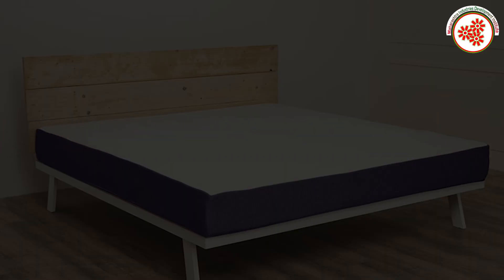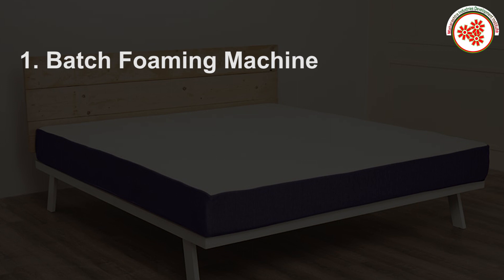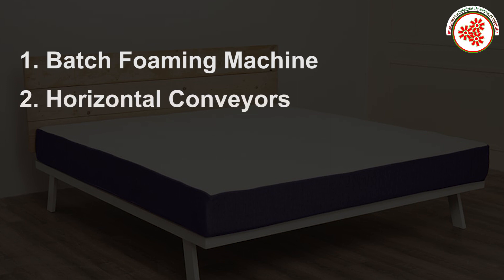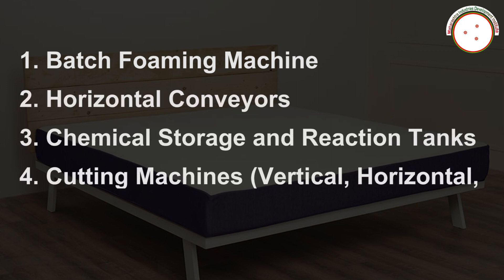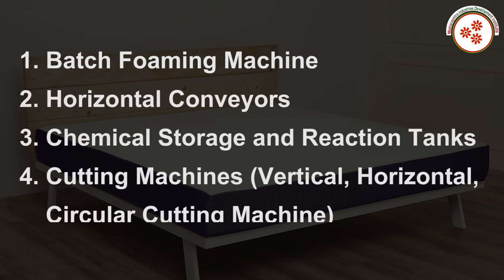Plant and machinery includes: batch forming machine, horizontal conveyors, chemical storage and reaction tanks, cutting machines — vertical, horizontal, and circular cutting machines.